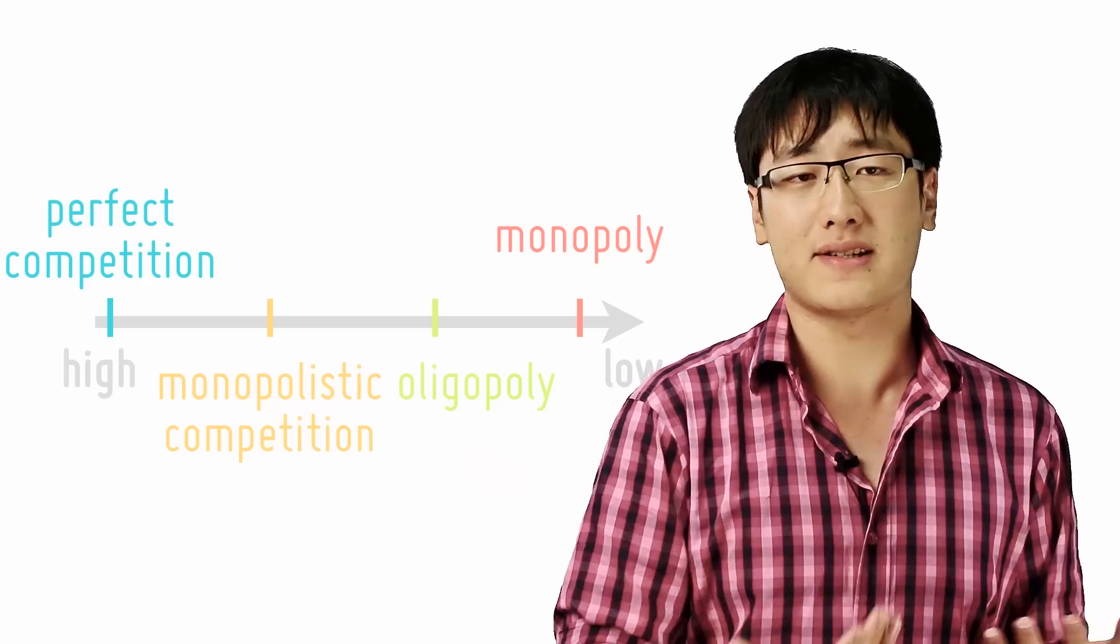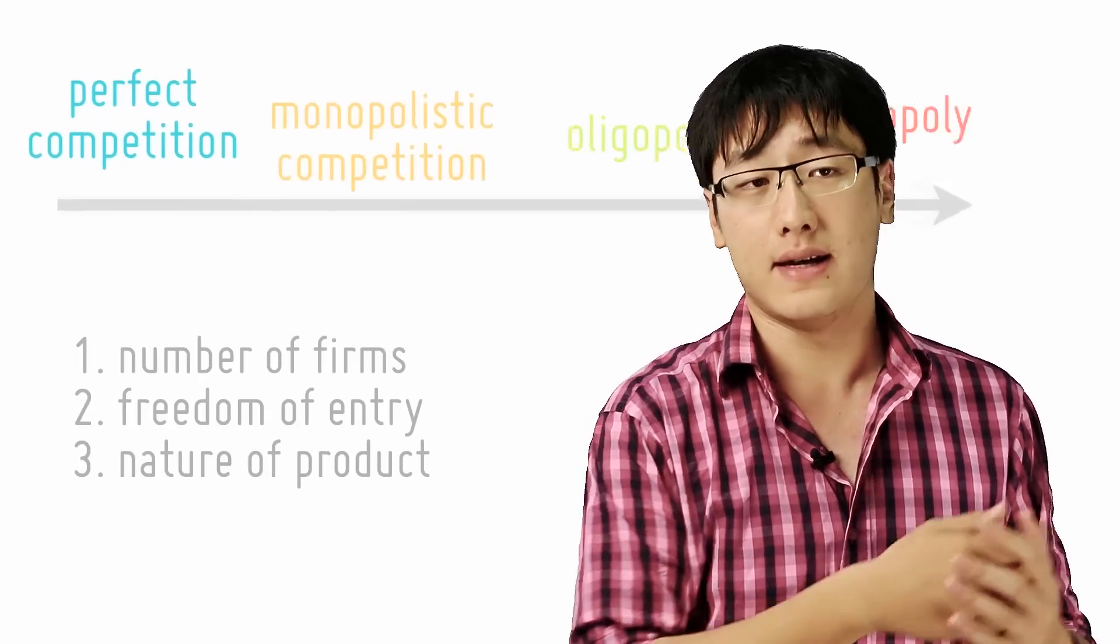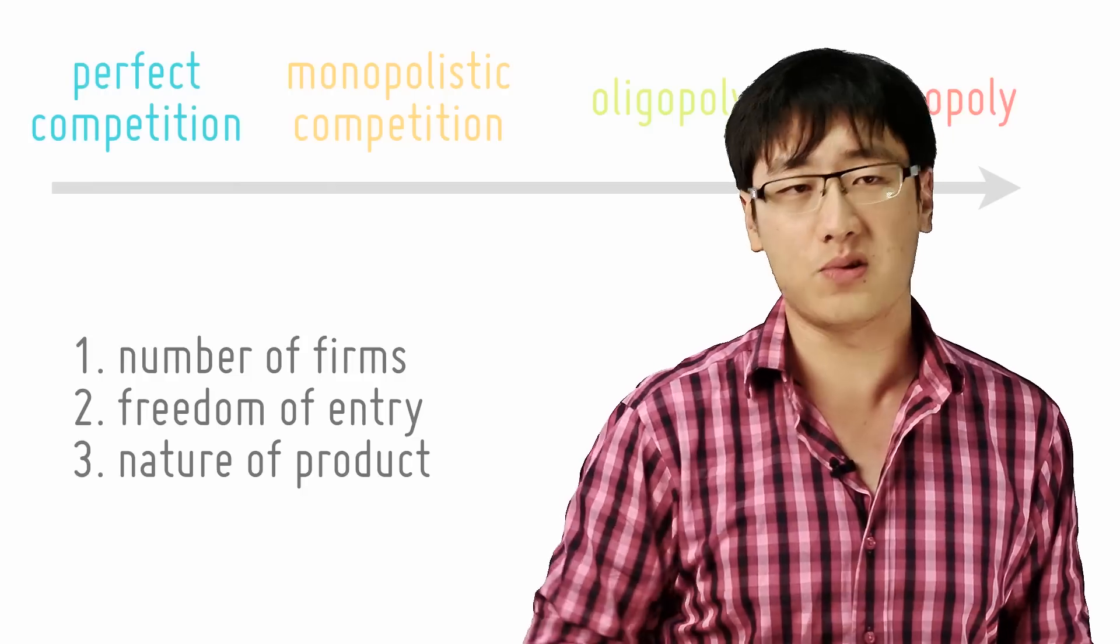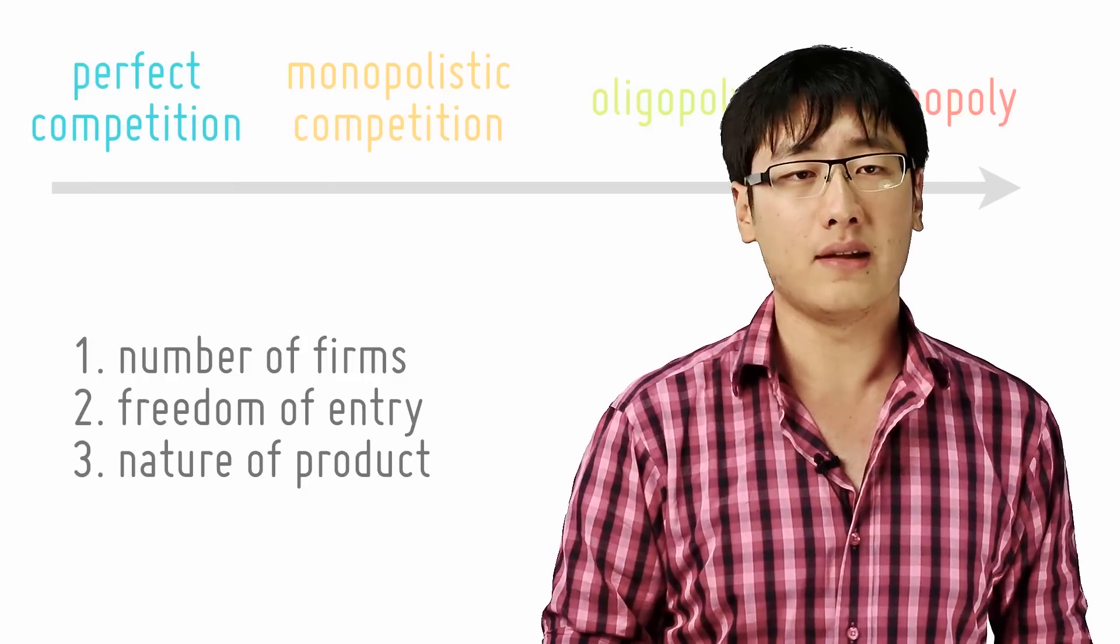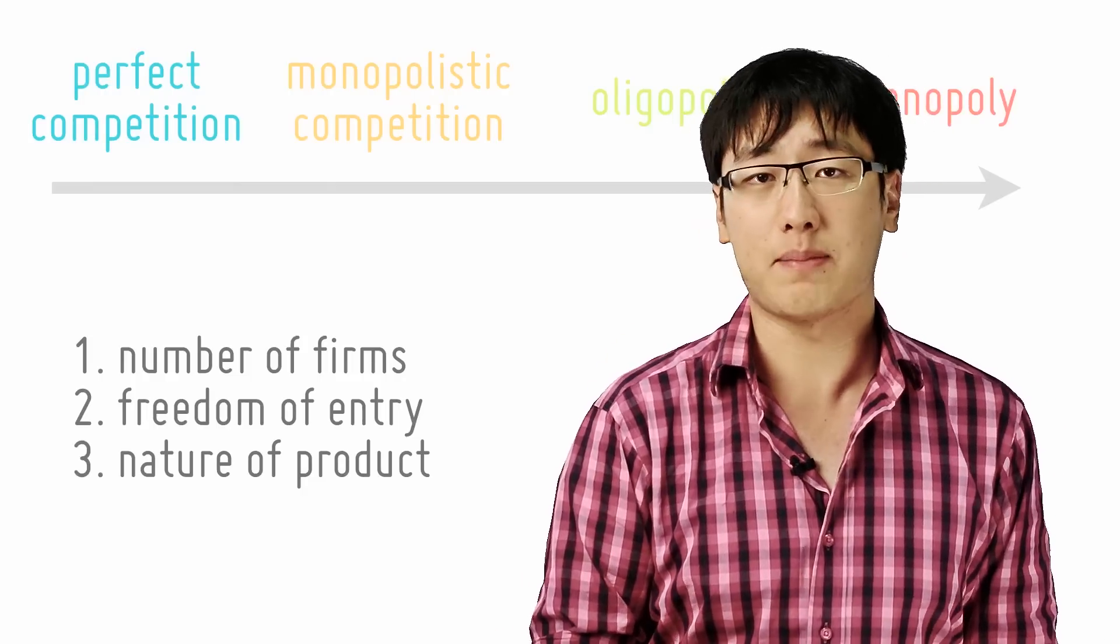So to distinguish them more precisely we use three indicators: number of firms, freedom of entry, and the nature of the product. This will be explored in the next segment.